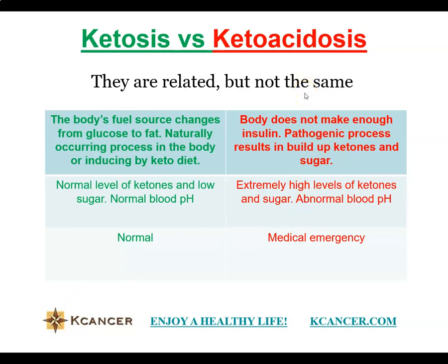However, ketoacidosis is a completely pathogenic process which can result in a buildup of ketone bodies and sugars. This is the situation when our body has no insulin. We know insulin is necessary for glucose getting into the cells, where glucose is used to generate energy as ATP for us. When insulin level is low, glucose cannot get into the body's cells and no energy is generated.